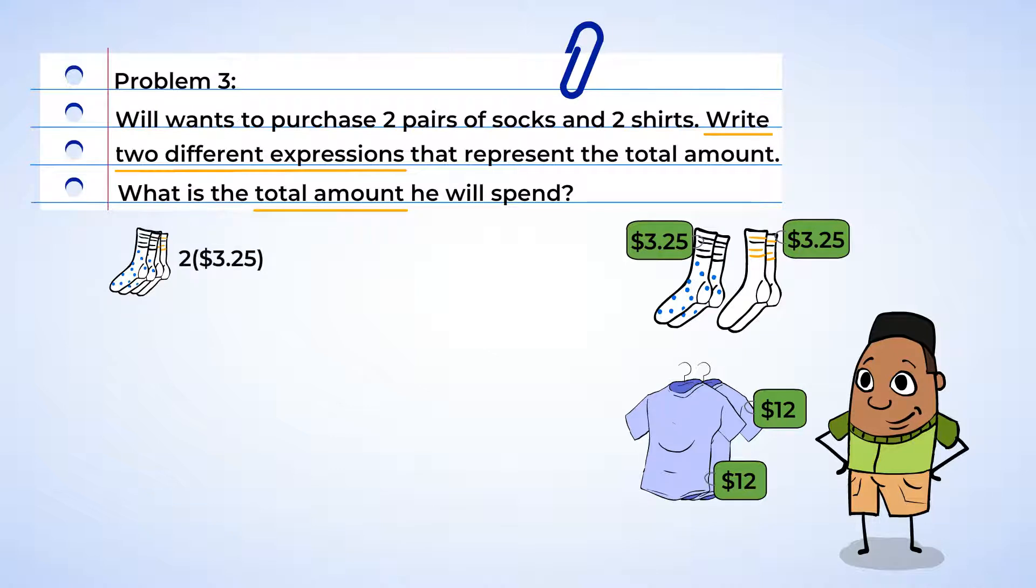All right, let's start with the cost of the socks. So two multiplied by $3.25. Now we can find the cost of the shirts. Two multiplied by $12. Now we can add these amounts together. And we have one expression! Look, there is a two that is being multiplied in both terms. And that means we can factor out a two from both terms. Now we have two times the quantity of $3.25 plus $12. And we have now made a second expression.